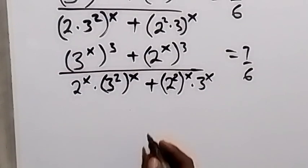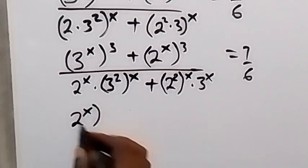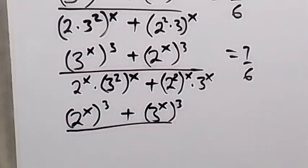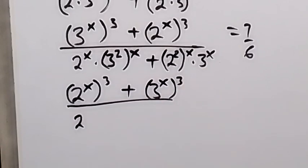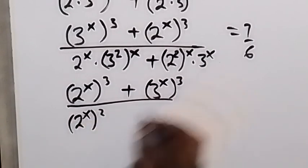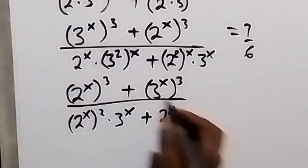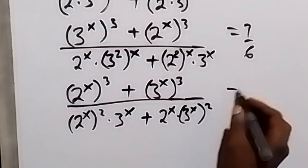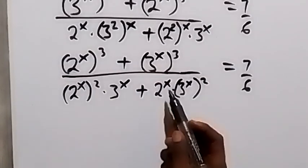In the next step, we rearrange what we have and write 2 raised to power x first, making the numerator become 2 raised to power x cubed plus 3 raised to power x cubed. In the denominator, we write 2 raised to power x plus 2 raised to power x times 3 raised to power x, leading toward substitution.